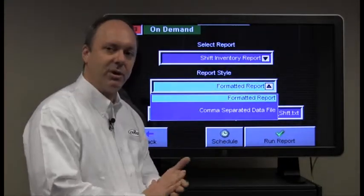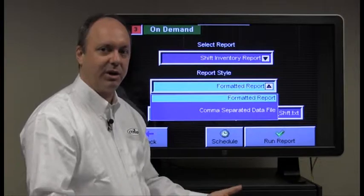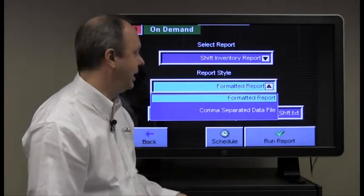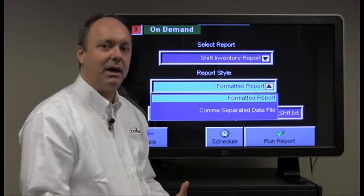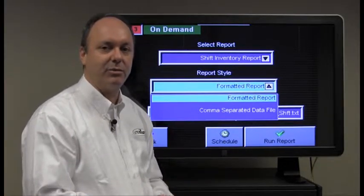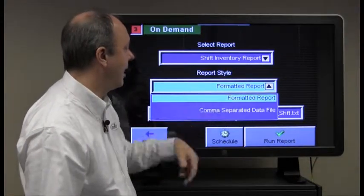We have a formatted report. We also have a comma separated data file. The formatted report looks pretty. There's not much you have to do to it. It comes out nice and neat and you can print it out. It's all very easy to read. The comma separated file is for users that would like to output the data and then later import the file into a spreadsheet program such as Excel. So we'll select formatted report.